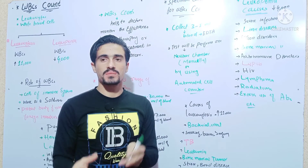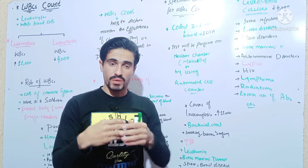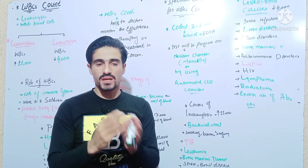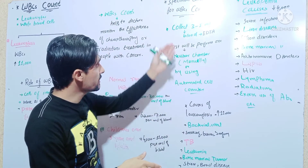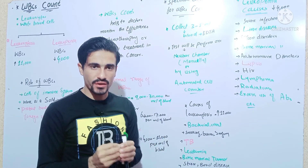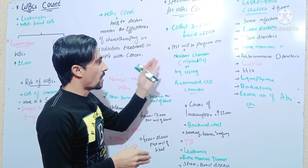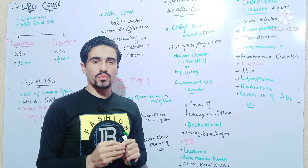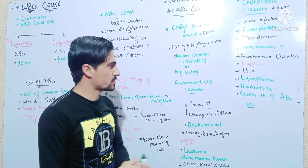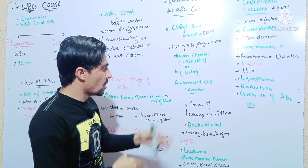For specimen collection, we collect 3 to 5 ml of blood in an EDTA tube. The WBC count can be performed using a manual method or an automated cell counter. These are the main methods used to count white blood cells.